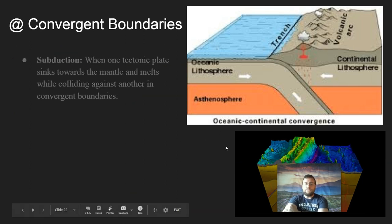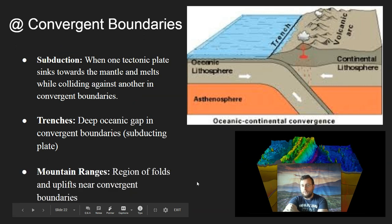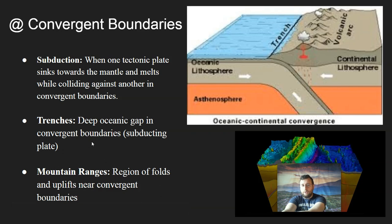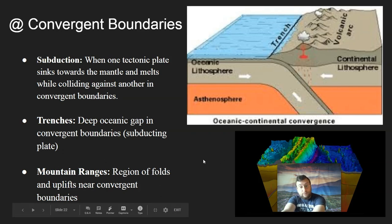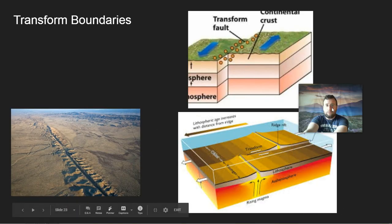The unique features of convergent boundaries are subduction, trenches, and mountain ranges. Trenches are only around where the ocean is involved. Explosive volcanoes are unique to convergent boundaries — volcanoes also happen in divergent boundaries and at hotspot volcanoes, but those are less explosive.